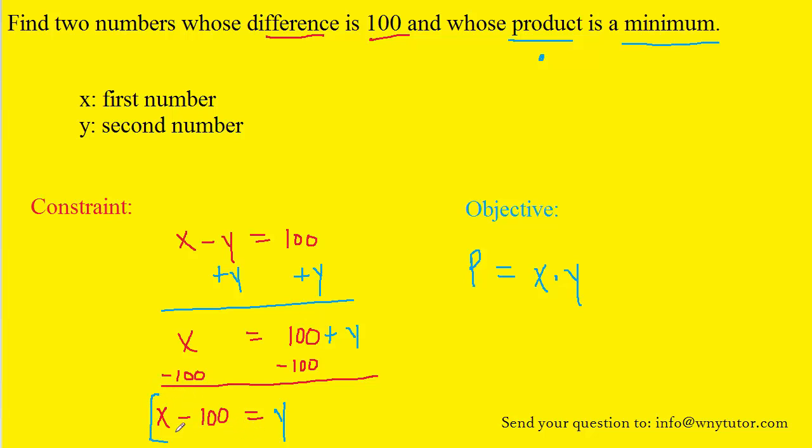Now we simply need to make a substitution. We're going to take the expression x minus 100 and plug it in for y into our objective equation. When we do that, we can see that the objective equation is now expressed in terms of a single variable x. We can go ahead and distribute the x through the brackets to get P equals x squared minus 100x.